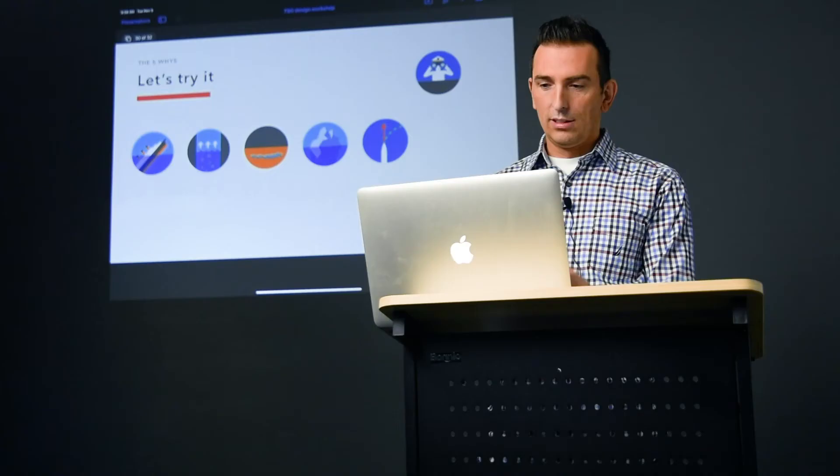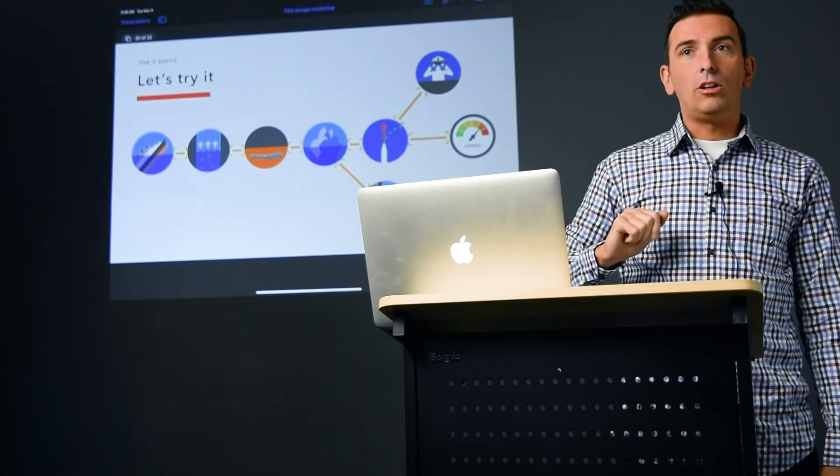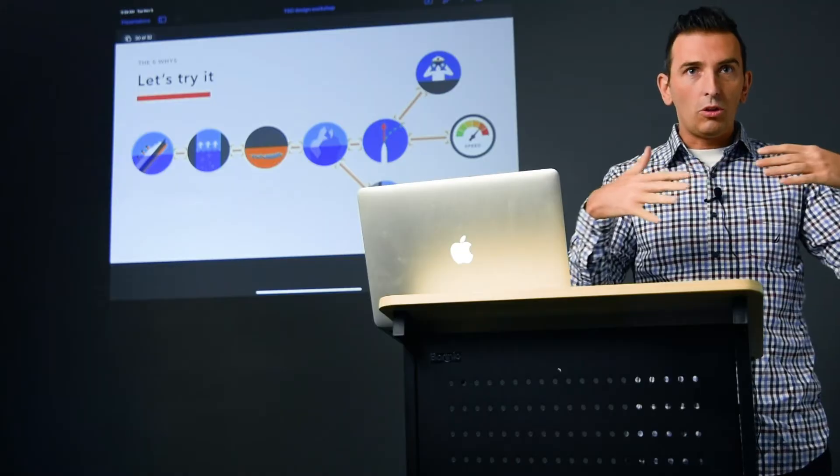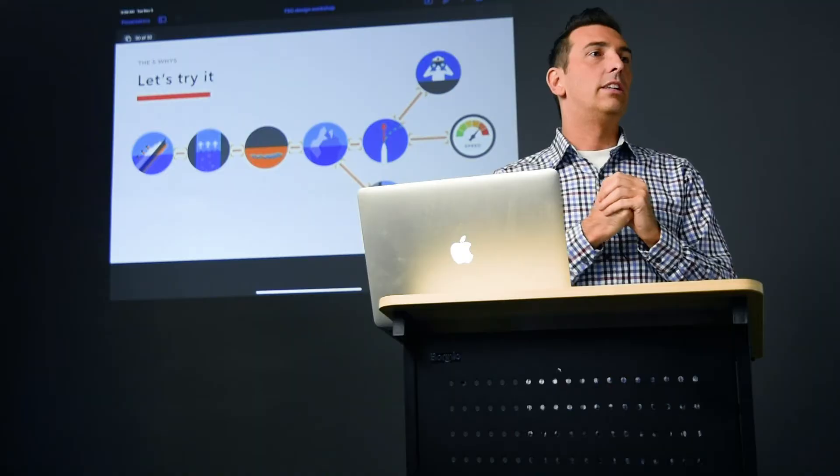Depending on who you ask, you might get a different answer. Someone else might say they were going too fast — and there's an interesting relationship there. If the lookouts can't see far enough ahead because they're going too fast, there needs to be communication to slow down and prevent that. And there's another cause: the design. Ultimately, how the ship was constructed — the strength of the hull, the steel plating, the rivets — those design considerations also contributed. Maybe it could have brushed that iceberg and withstood the impact if the construction had been more robust.